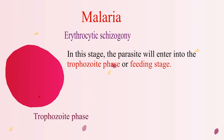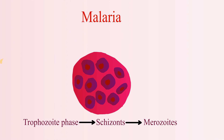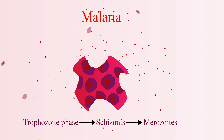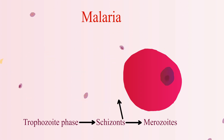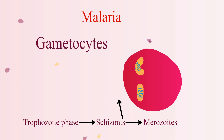In this stage, the parasite will enter into the trophozoite phase, or feeding stage. The trophozoite will mature into schizontes. Some of the mature schizontes will then rupture and release merozoites into the bloodstream, and some of them will differentiate into sexual erythrocytic stages called gametocytes.